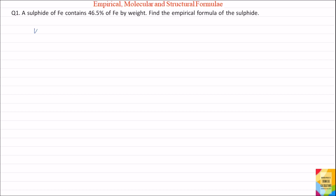Therefore, the weight of sulphur will be equal to 100 minus the weight of iron, that is 46.5 grams, and this is equal to 53.5 grams. So, weight of iron is 46.5 grams and weight of sulphur is 53.5 grams.